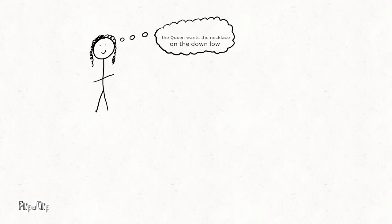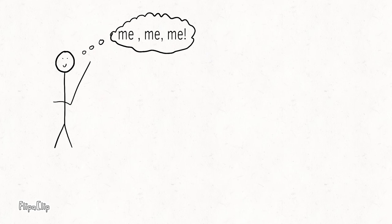Comtesse de la Motte made up the story that the queen desired the necklace, though wanted to get it secretly, as to avoid public judgement for yet another extravagant expenditure. As the Cardinal was keen to gain royal recognition and favour, he agreed to buy the necklace from the jewellers on behalf of the queen.